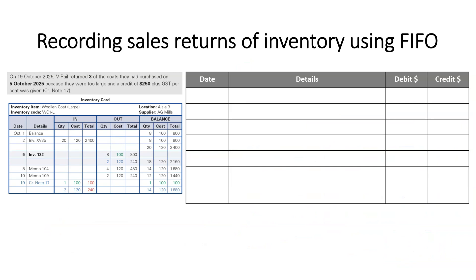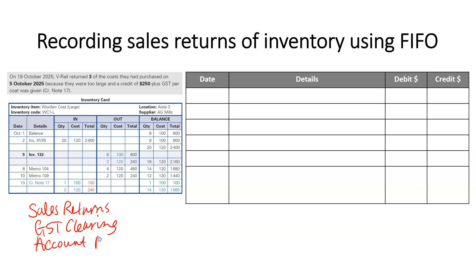You'll notice that in the inventory card the $100 units are still listed first and then the $120 units, following the balance layout. This is the tricky part of inventory cards — knowing how to lay them out correctly. To record this sales return, we follow the same practice as before and sketch out the accounts: sales returns, GST clearing, account receivable for V-Rail, inventory, and cost of sales.